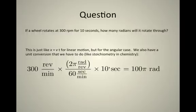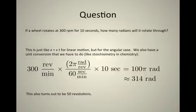The answer then becomes 100π radians. This is about 314 radians, if you remember that π is about 3.14. Or you can also remember that this is exactly 50 revolutions because there's 2π radians in every revolution.